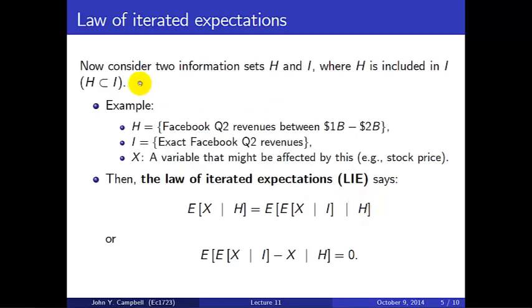Now what we're going to do is consider two different information sets, call them h and i, where h is included in i. That's to say h is a smaller set of information than i, a strict subset of i. So for example, h might be knowledge that the Q2 revenues of Facebook lie somewhere between one billion dollars and two billion dollars. Maybe somebody tipped you off that that's the case.